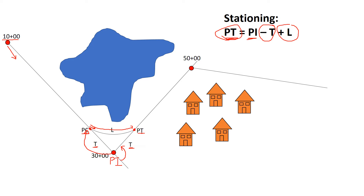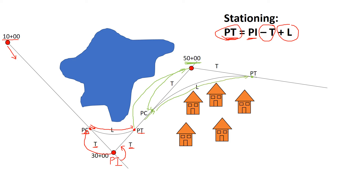As we continue along this preliminary traverse, we measure the distance from our PT to the next point of intersection. If we measure that distance from the PT to our next PI, we get station 50. From there, a smooth curve connects the two tangents — it will have a PC and a PT. Moving along the center line of the roadway, we subtract the tangent length T from the second PI and then add the length of curve L to reach that PT.